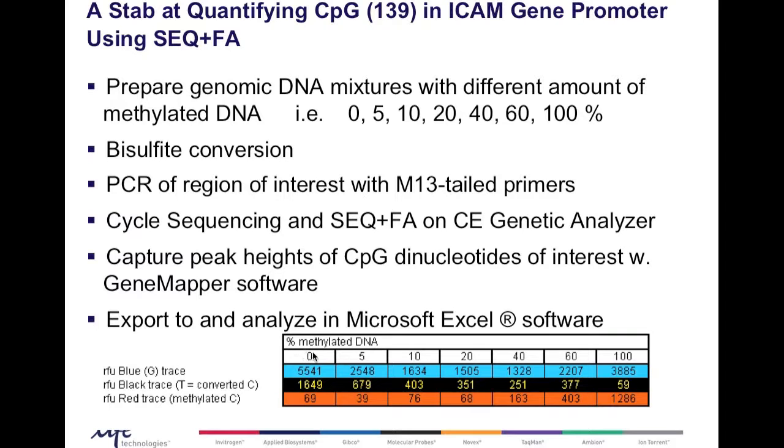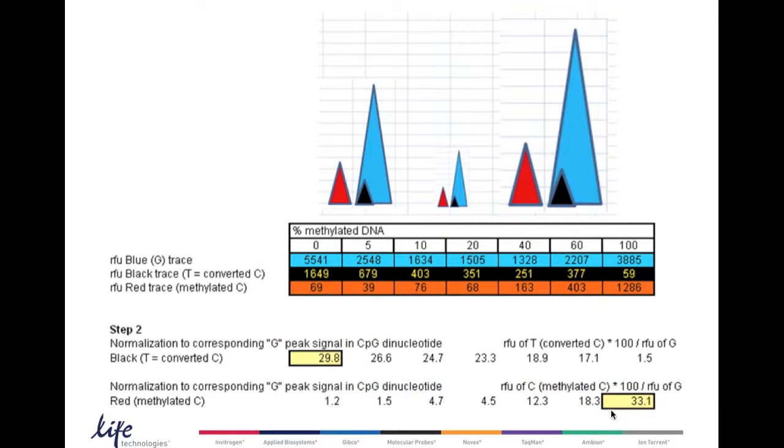Here we see the methylated DNA: 0%, 5%, 10%, 20%, 40%, 60%, and 100%. The blue traces are shown here, the peak heights of the blue traces. The peak heights of the black traces are shown here and the peak heights of the red traces are shown here for these various samples. There is some sample-to-sample variation, peak height variation, and to account for those we have to normalize the actual data.